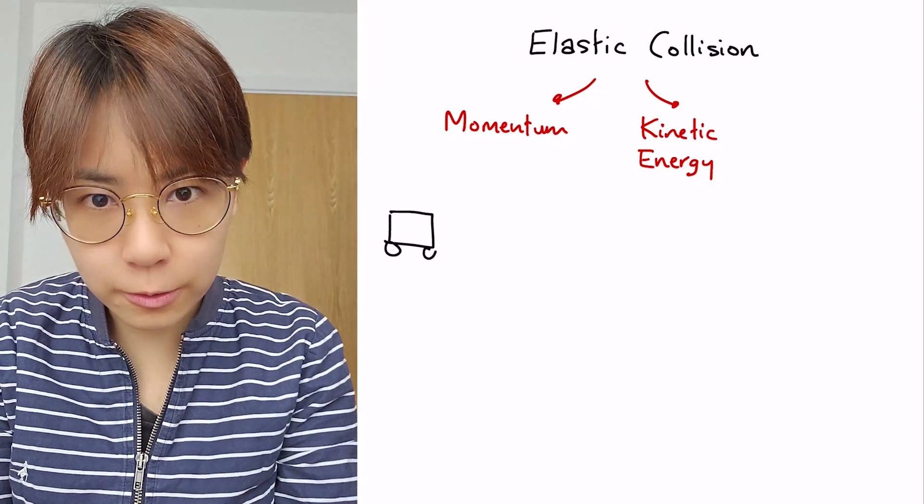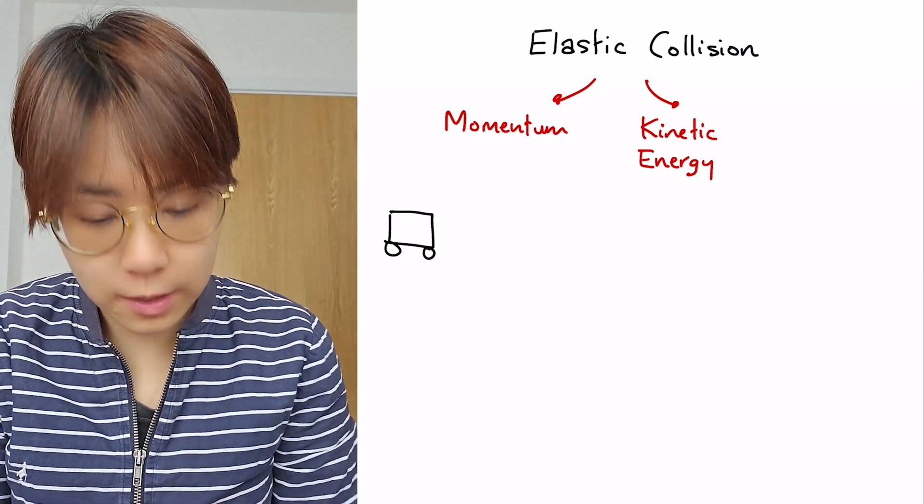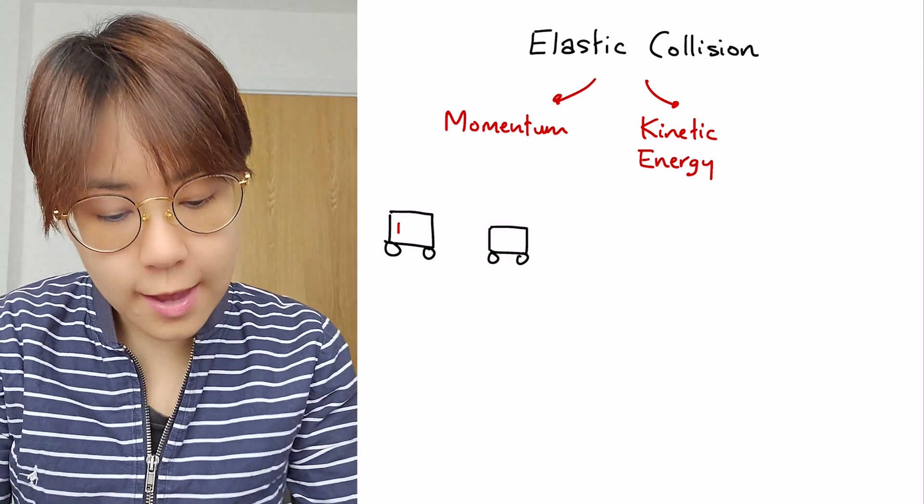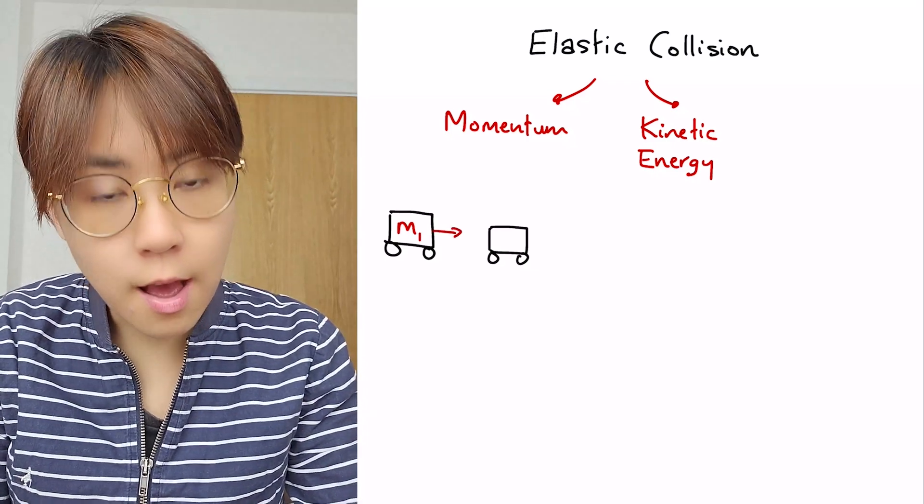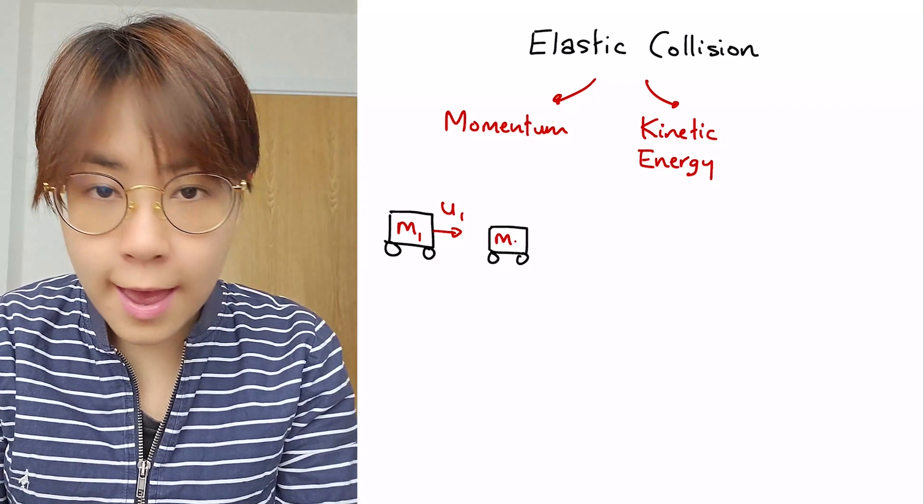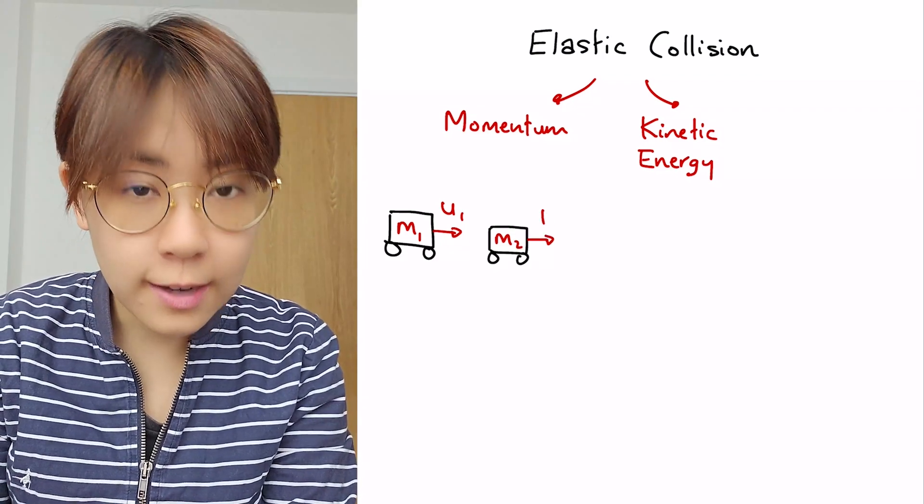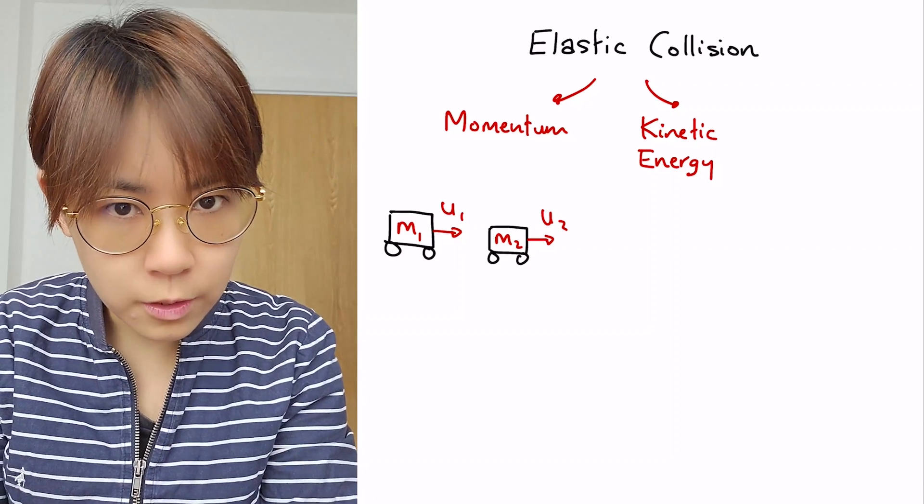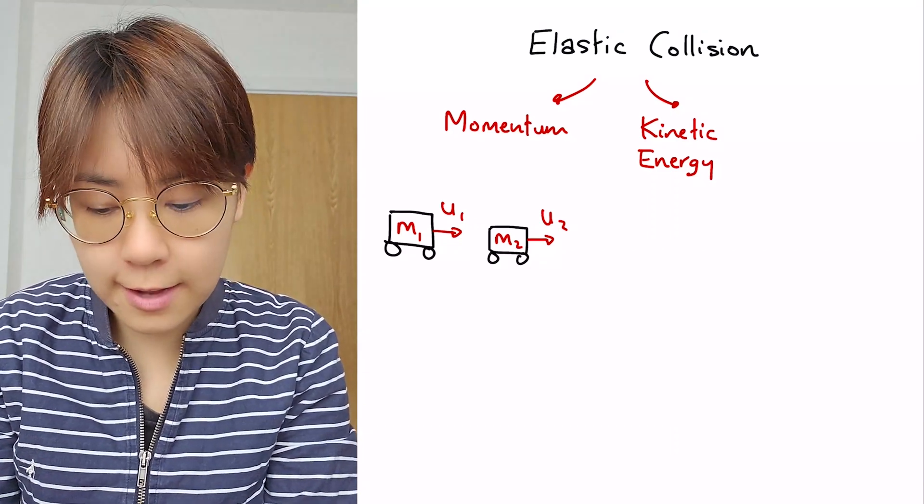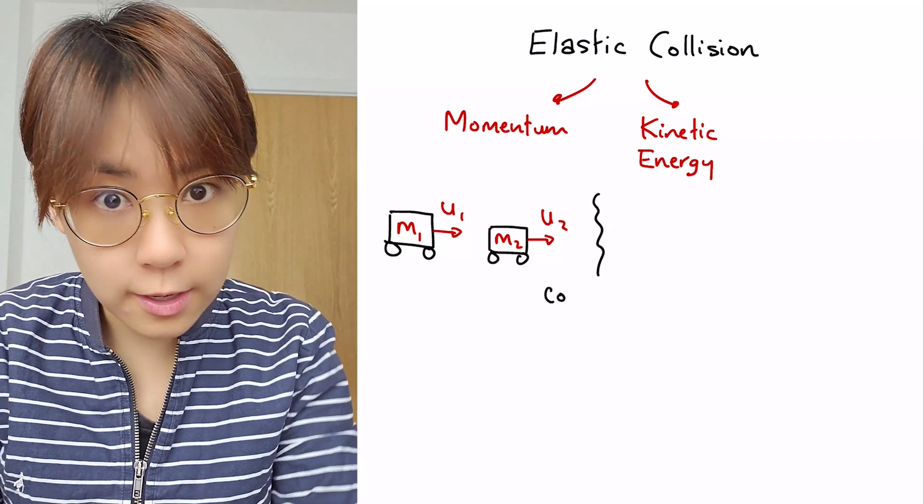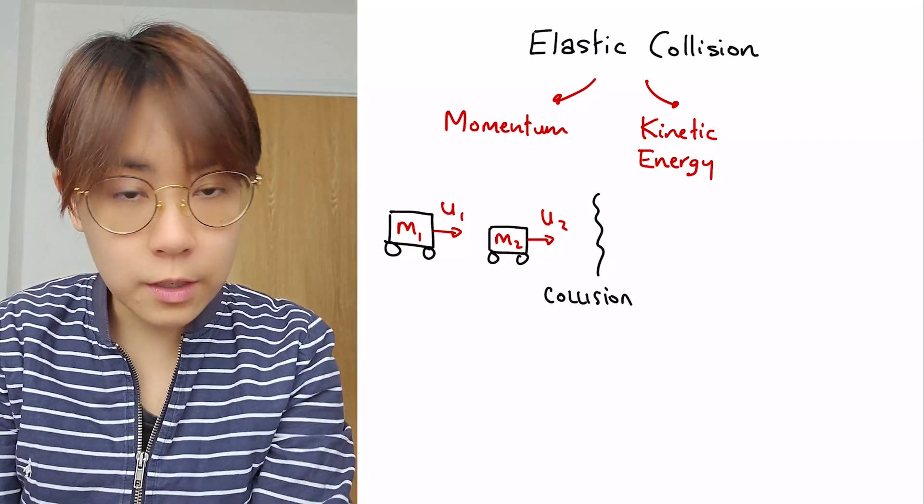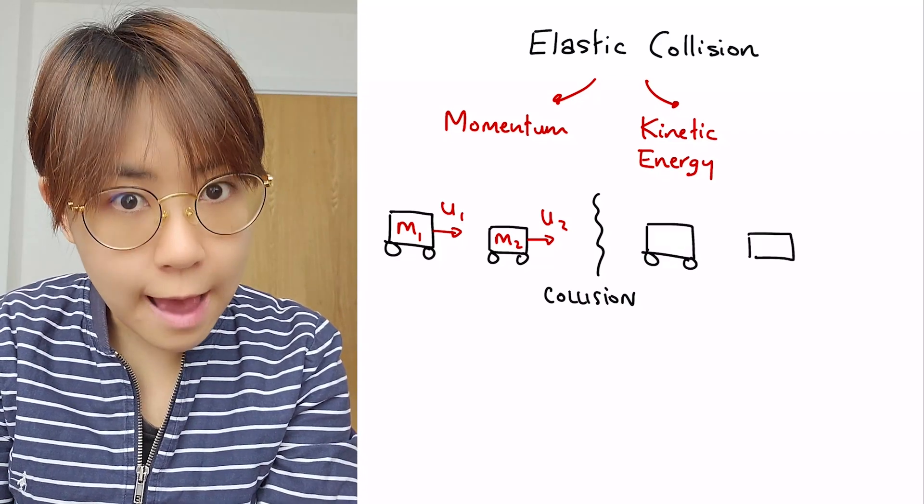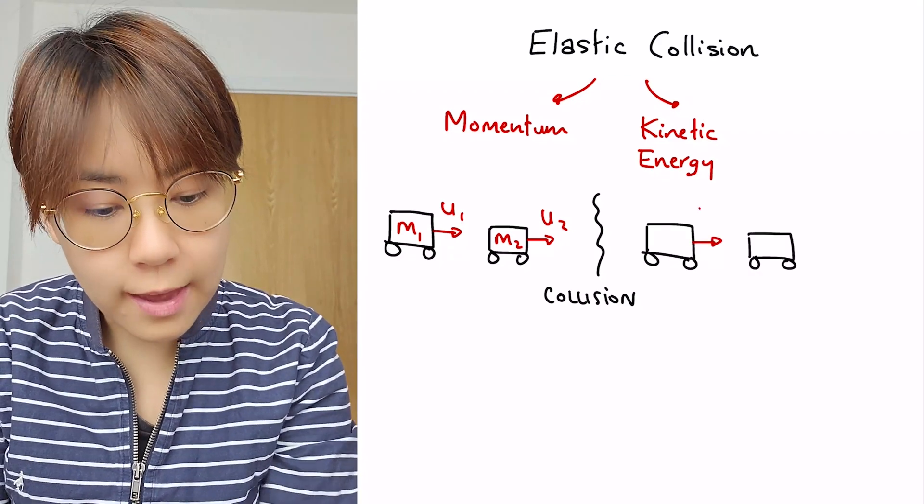Let's break it down with this example. Imagine we have two vehicles. Vehicle 1 has a mass of m1 and an initial velocity of u1. Vehicle 2 has a mass of m2 and it starts off with an initial velocity of u2. So we're using these symbols to represent the masses and the initial velocities. When these two vehicles collide, they end up moving with a different velocity afterwards, v1 and v2.